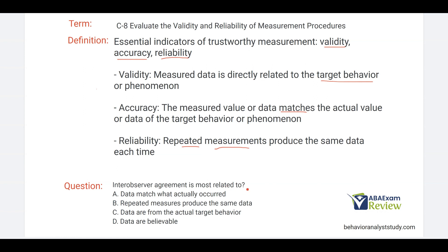Inter-observer agreement is most related to what? Inter-observer agreement could be considered the fourth indicator, but we're going to talk about IOA in a separate video entirely. Inter-observer agreement is really related to data that are believable — that is the key with IOA. Data matching what actually occurred is accuracy; repeated measures producing the same data is reliability; data from the actual target behavior is validity. IOA really indicates that data are believable.